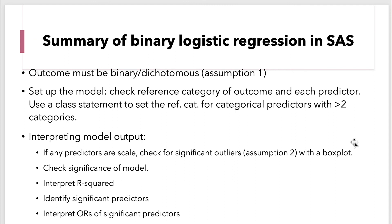So we are done with the examples. To briefly summarize binary logistic regression in SAS: the outcome must be dichotomous. When setting up the model, check the reference category of the outcome and each predictor. For categorical predictors with more than two categories, use a class statement to set the reference category — you can also do this for binary predictors. When interpreting model output, check for significant outliers for scale predictors using a box plot, check the significance of the model, interpret R-squared, identify significant predictors, and finally interpret the ORs for significant predictors, including the p-value and confidence intervals in your sentence. That concludes today's tutorial on logistic regression in SAS.